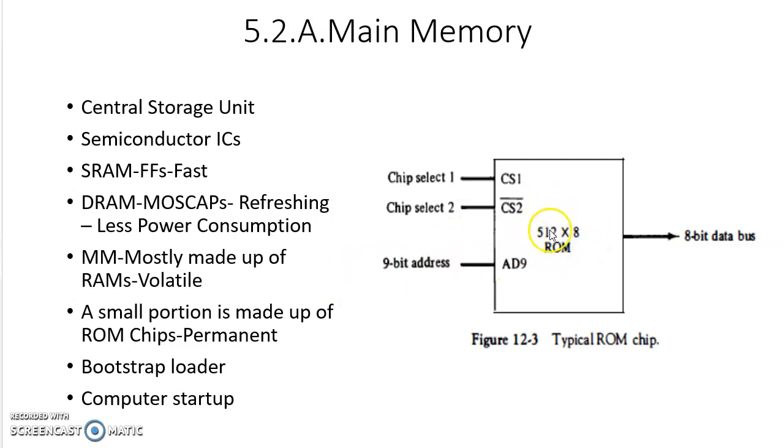That means there are 512 different memory locations there. Each and every memory location can store 8-bit information. The CPU will send a 9-bit address because 2 to the power of 9 equals 512 to select any one of these 512 memory locations and access it whether to put data or to retrieve data. This is the data bus.